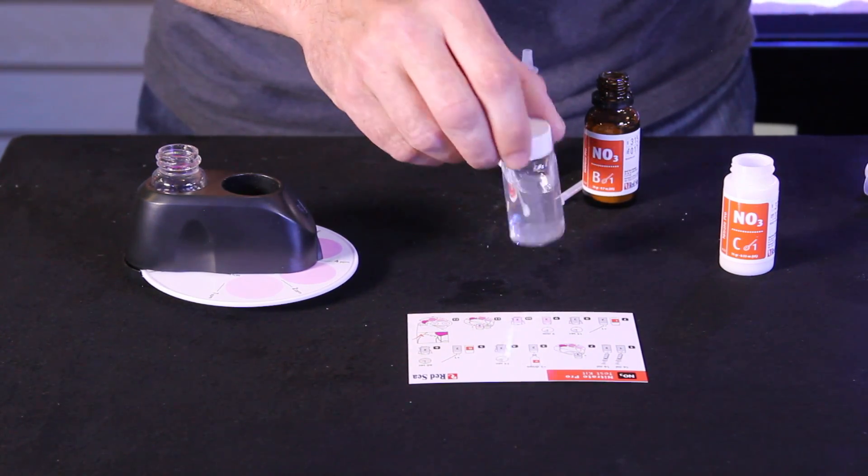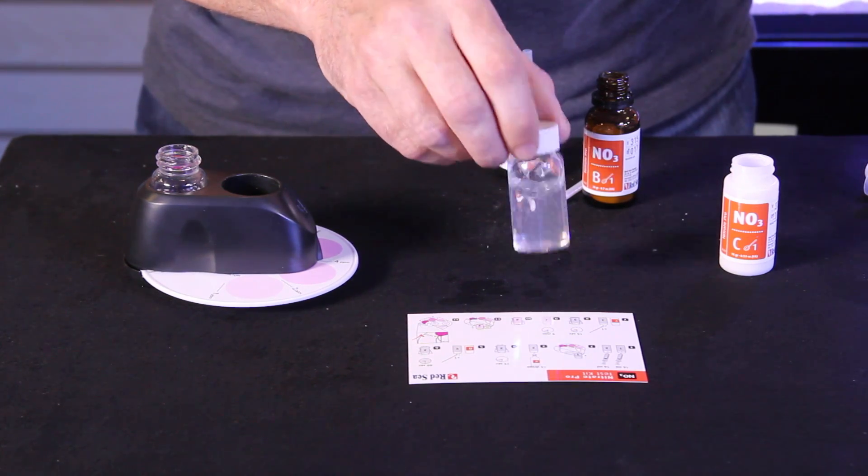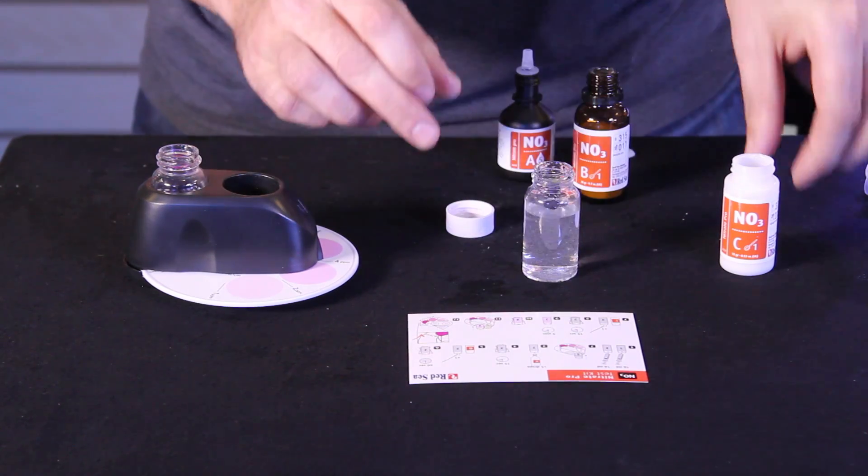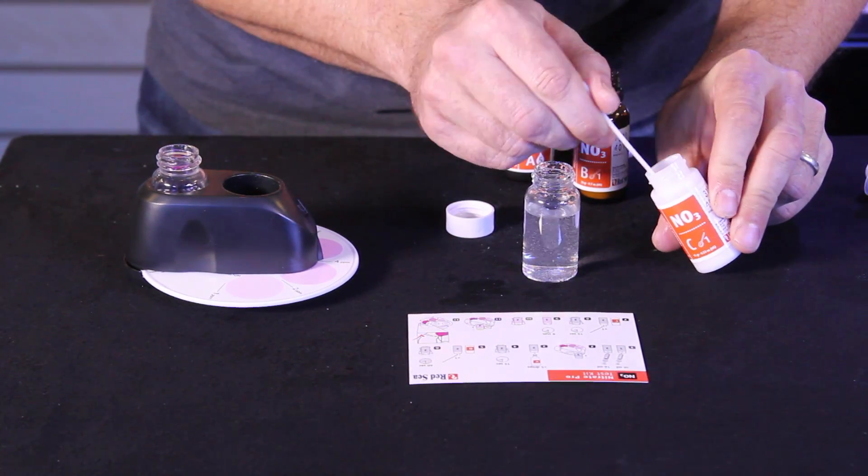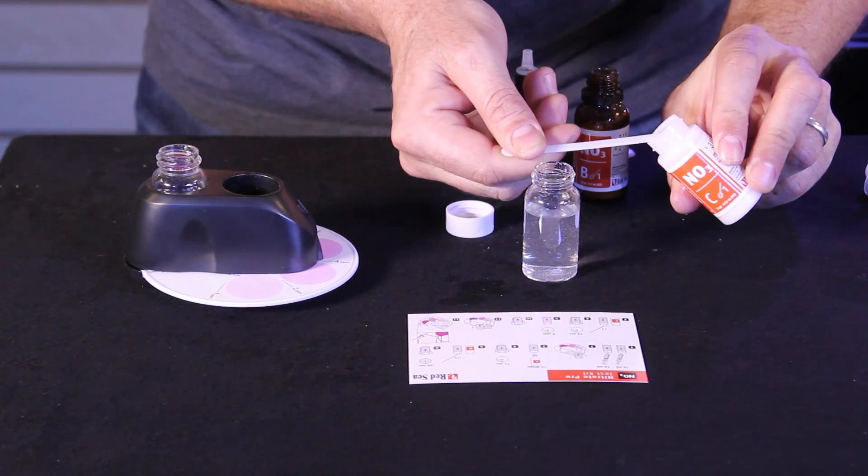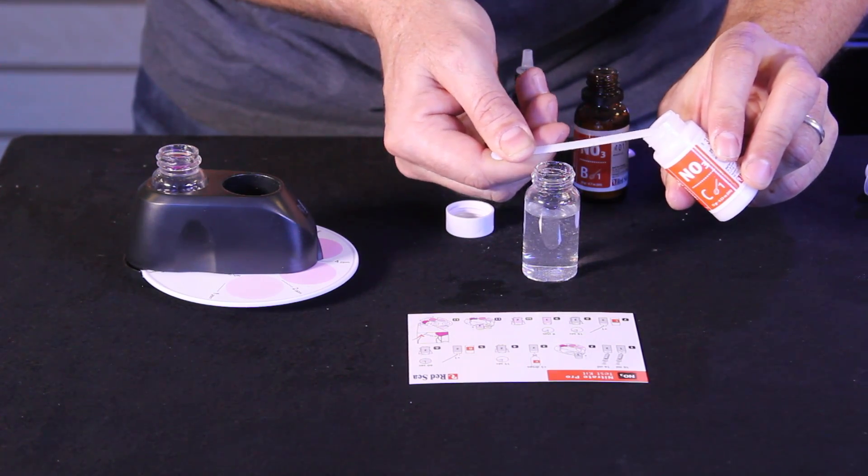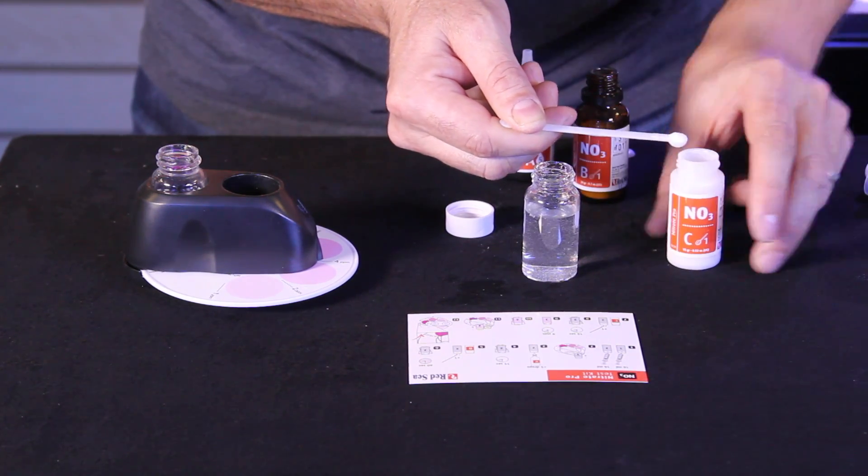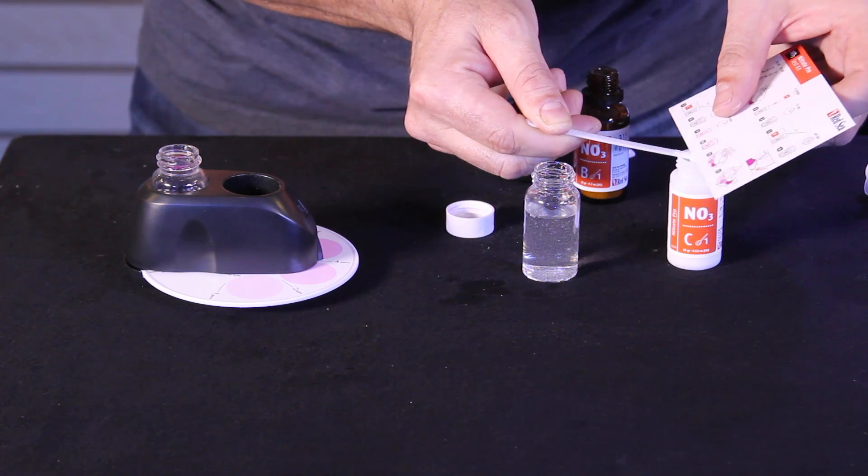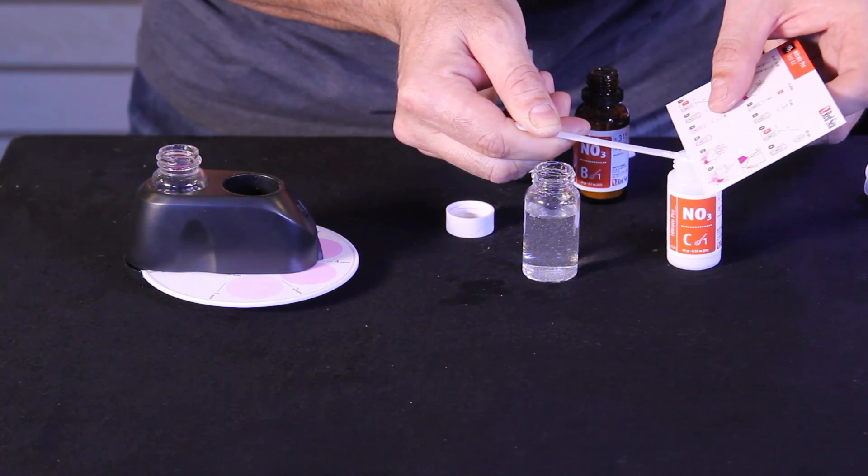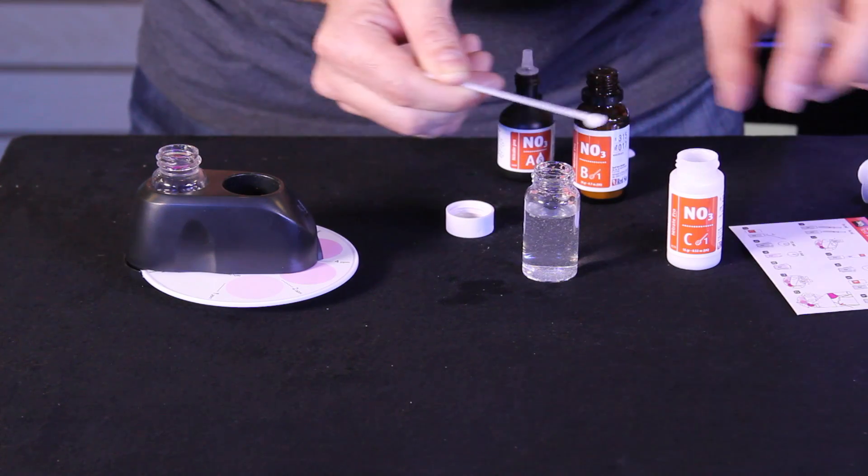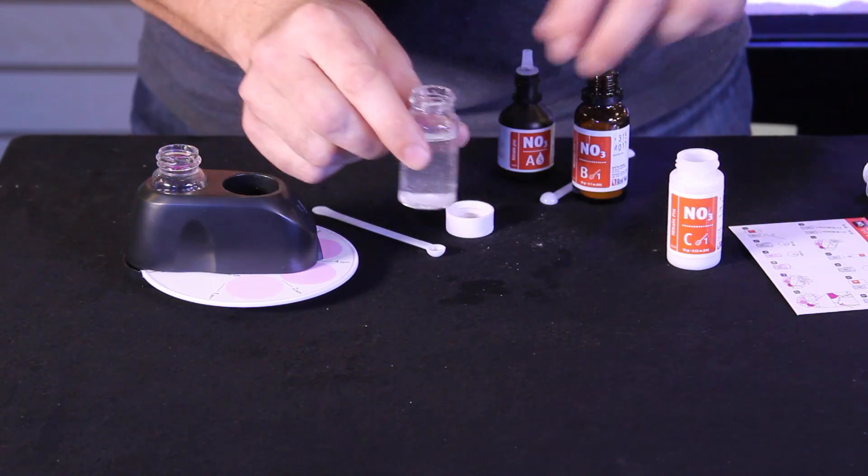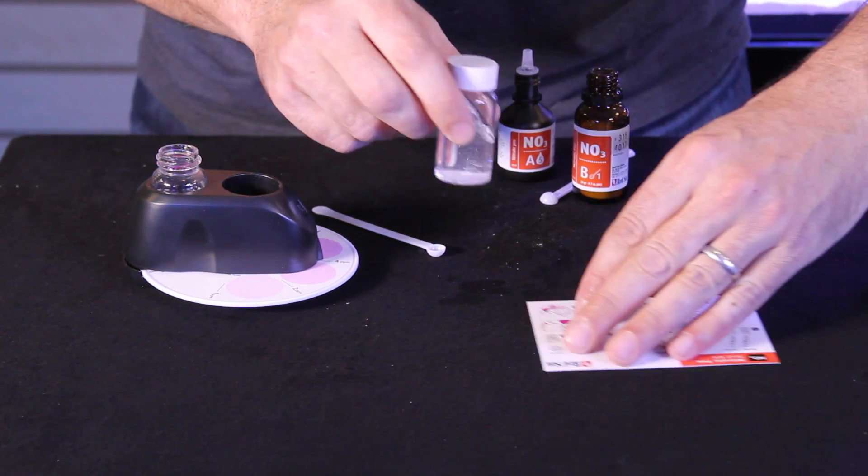So the next step again will be one level scoop of reagent C. Go ahead and do that. Take your time and get a level scoop. If you're having trouble just use the card to level it like baking a cake. You want to make sure again to do accurate tests. Now we're going to cap that and swirl for 15 seconds.